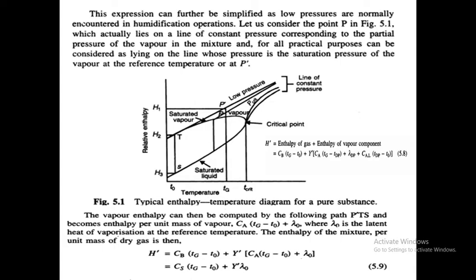The enthalpy of the mixture per unit mass of dry gas is: H' = Cb(Tg - T0) + Y'[Ca(Tg - T0) + λ0]. Here the temperature range in this part, P' to T, is Tg to T0. We are not considering the dew point here because this is the enthalpy of the mixture per unit mass of dry gas, so Y'·Ca·(Tg - T0) applies.